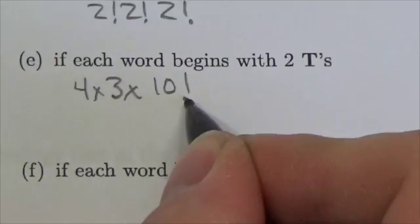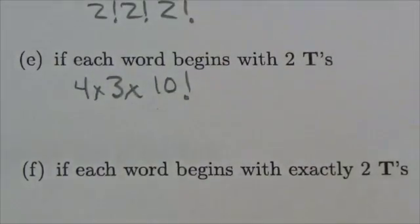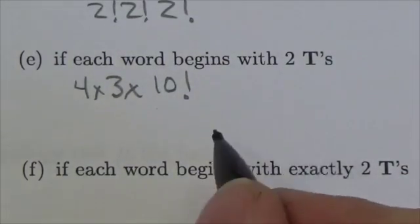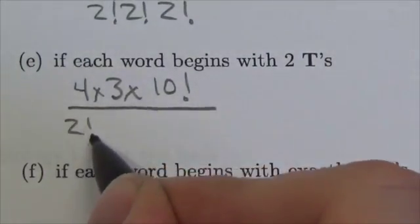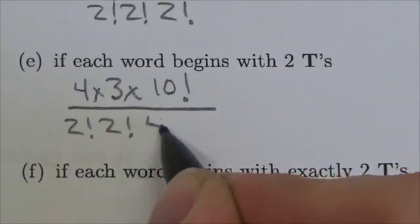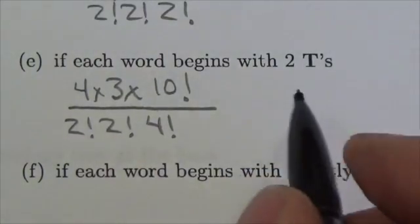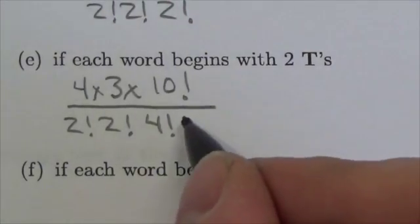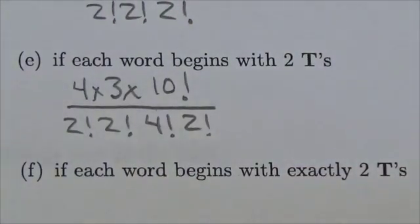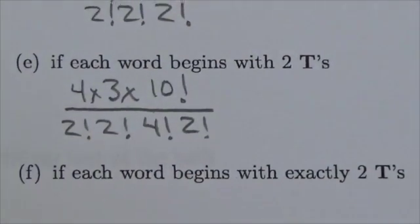So there are 10 letters remaining. I just got to permute those. So that's 10 factorial ways that those could be permuted. But again, I remember that there's repetition here. So divide by the two I's, the two N's. I'm still dividing by the four T's, because I can switch those around without seeing any difference here. And then two E's. So that's how you do it if you're supposed to start with two T's.